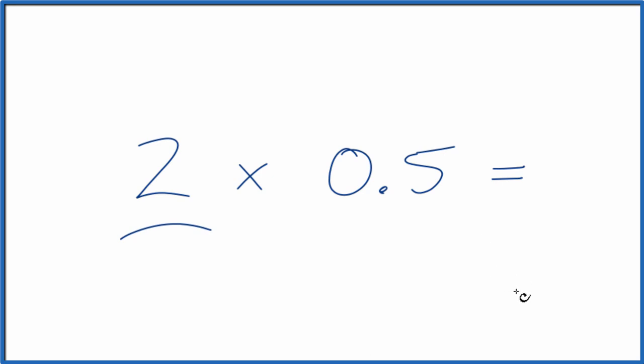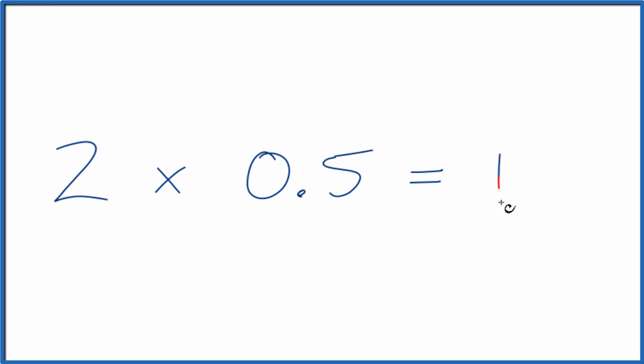First of all, you could just, on your calculator, you could multiply 2 times 0.5 and you'll end up with 1.0 or maybe just 1 by itself. So that's the first way to do it. 2 times 0.5 on your calculator, it'll give you a 1.